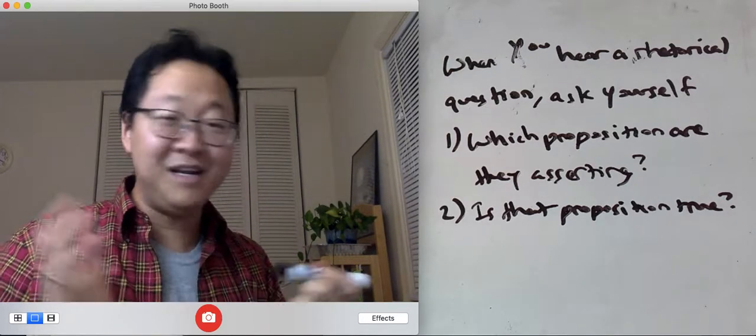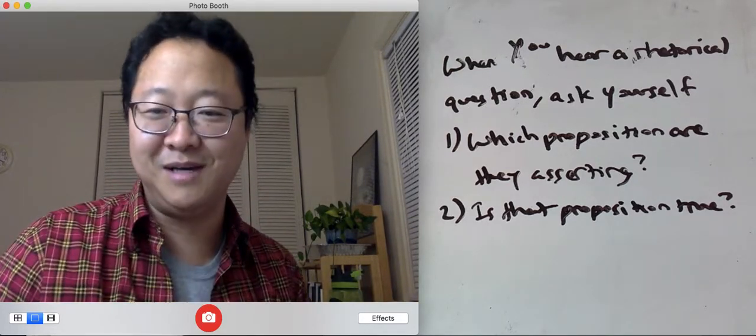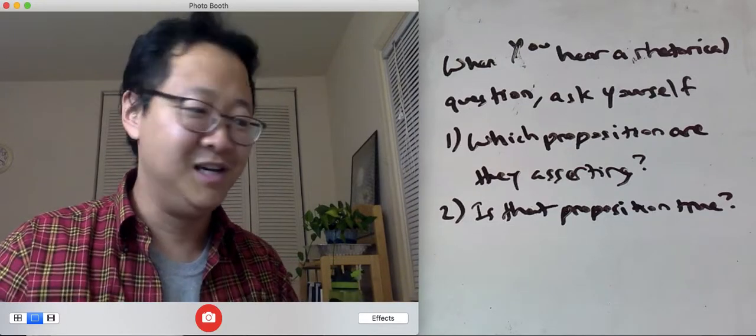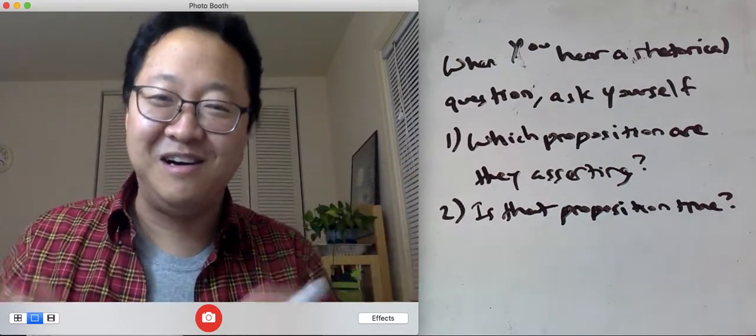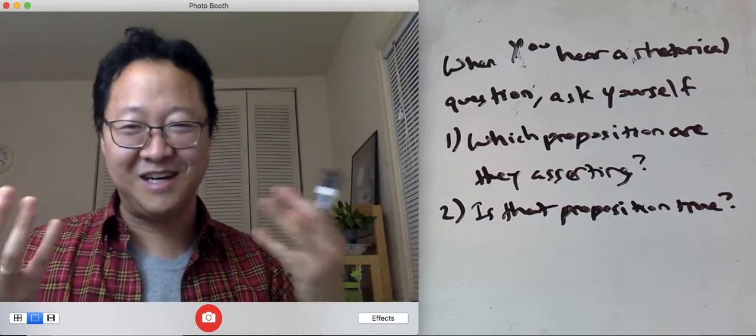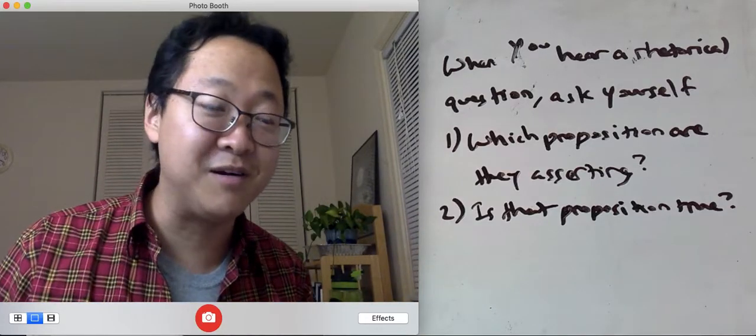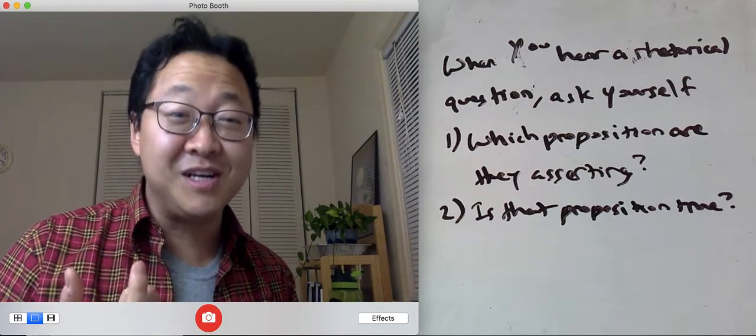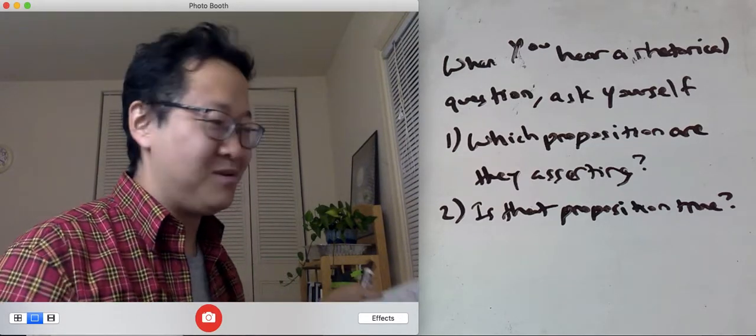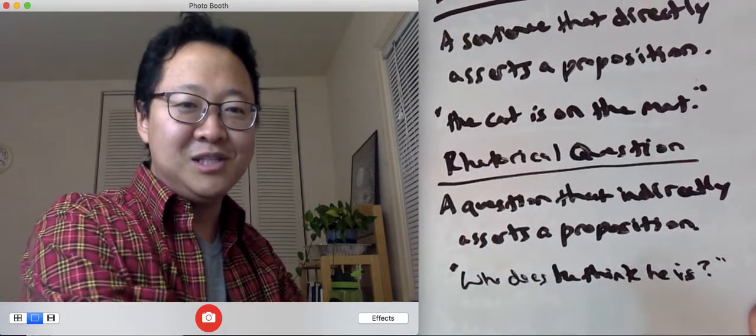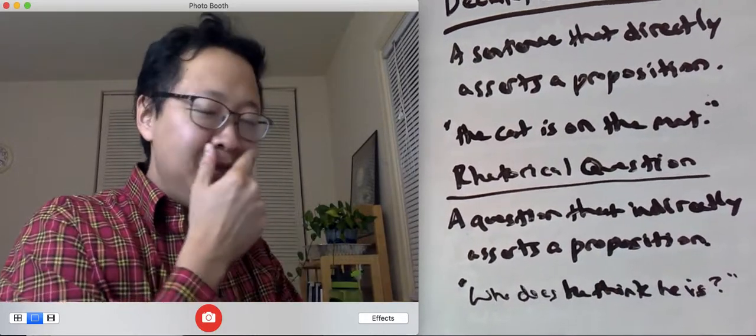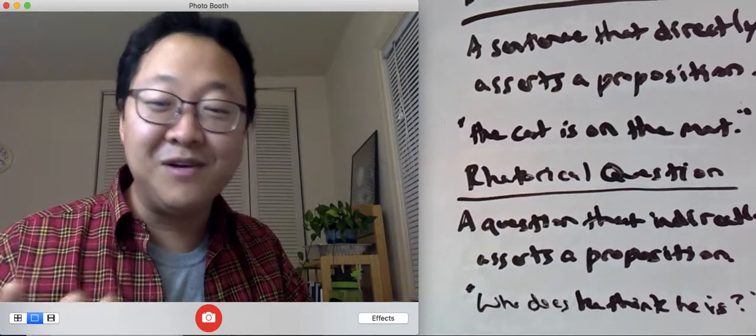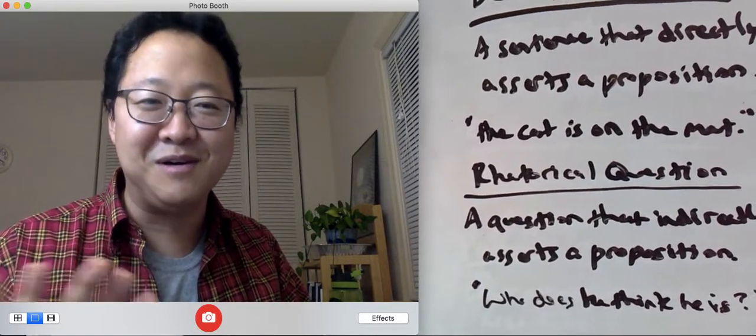So sometimes, one rhetorical question people ask in my ethics class is 'Who's to say what's right or wrong?' Now, what might they be asserting there indirectly? Going back to our definition, what's the proposition that they're indirectly asserting? They might be saying nobody's ever in a position to say what's right or wrong.